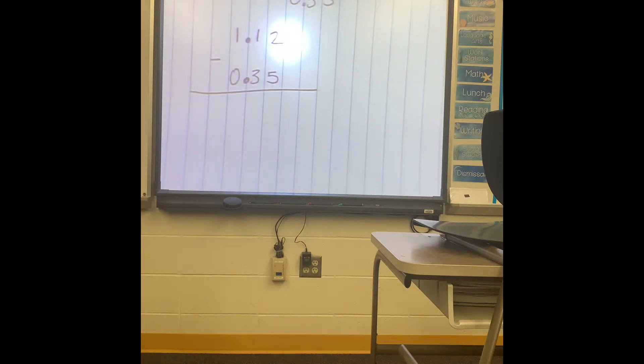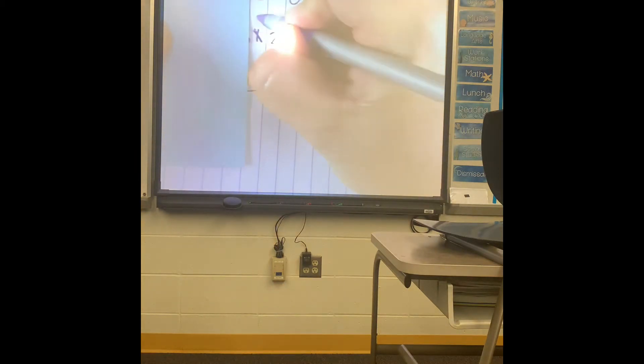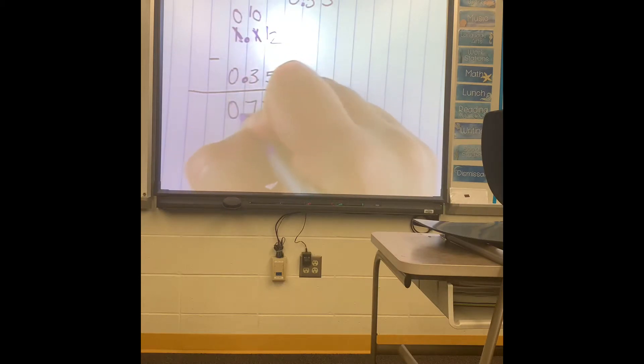Now what I tell the students is if they need to cover it up, I cannot do 2 minus 5. So I'm going to borrow from my 1, make him a zero. Now I have 12. I can do 12 minus 5. That's 7. Oh, I cannot do 0 minus 3. So I need to borrow again, but now I have 10. So 10 minus 3 is 7, and 0 minus 0 is 0.